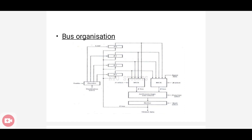The destination register that receives the information from the output bus is selected by a decoder. If the decoder is enabled, it activates one of the registers as the destination register. It is enabled using an enable signal and a destination select signal. The shifter output bus is S-Bus, which is connected to all registers. The control signals are enable and destination select — enable activates the decoder circuit, and destination select chooses which register receives the data.